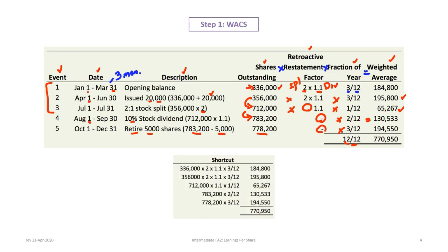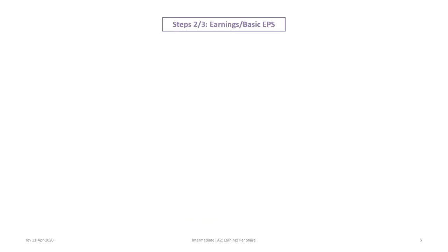Once you understand the table, there is a shortcut. It contains all the same information without the formal table structure. Starting from the beginning: 336,000 shares times 2 times 1.1 times 3 over 12 equals 184,800, and you follow that all the way through. The key is ensuring the retroactive restatement factors are applied to the correct periods — you can see where the split happened and where the stock dividend happened — and we arrive at the same result.